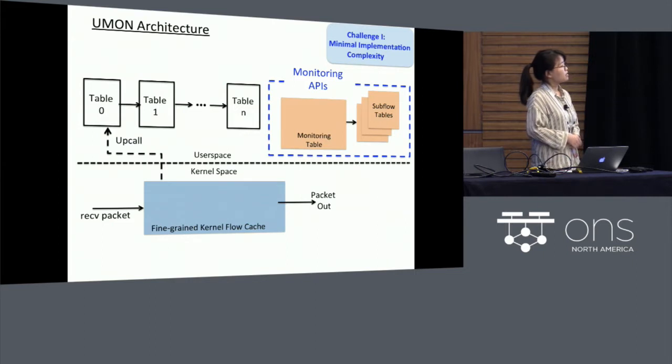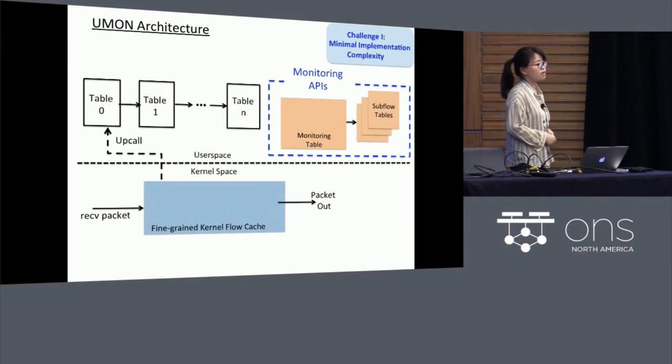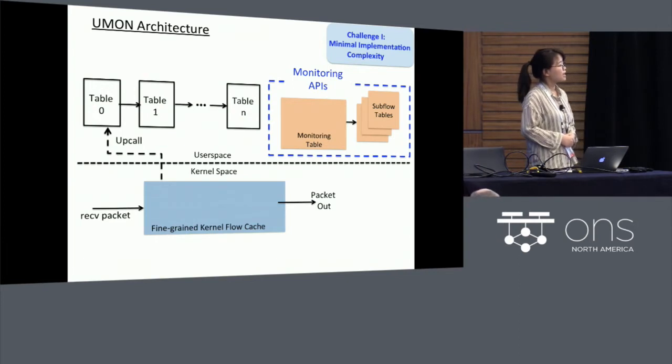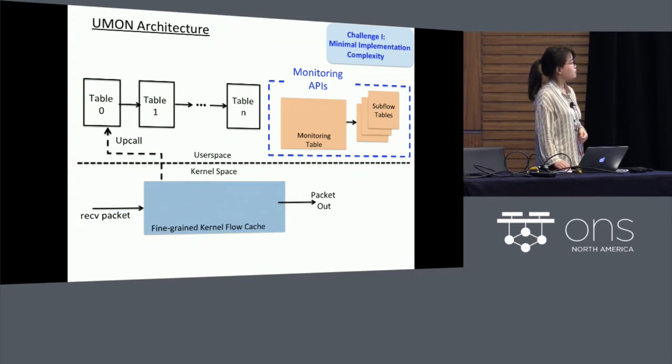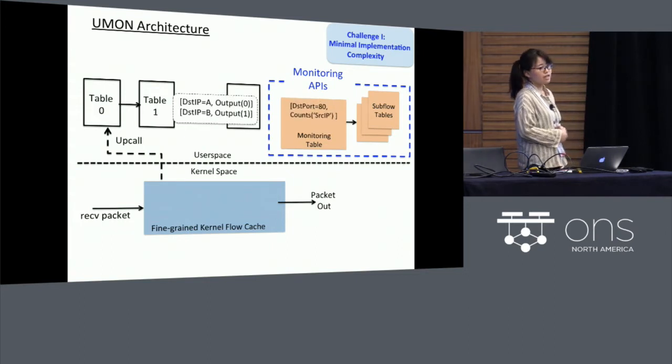More specifically, it maintains a monitoring table as well as subflow tables to maintain the flow stats information. In the monitoring table, it defines different megaflow monitoring rules. And corresponding to each megaflow monitoring rule, there is a separate subflow table that collects flow stats for the subflows that belong to this megaflow monitor rule. So to give you a general idea of how this works, here's a very simple example.